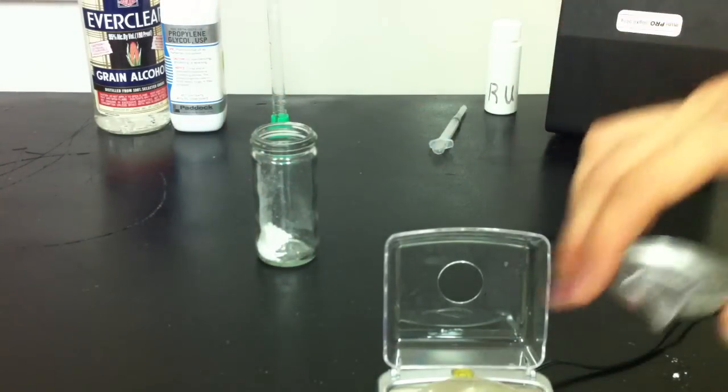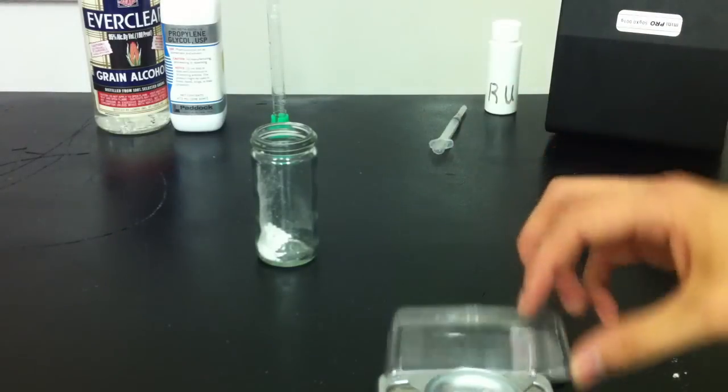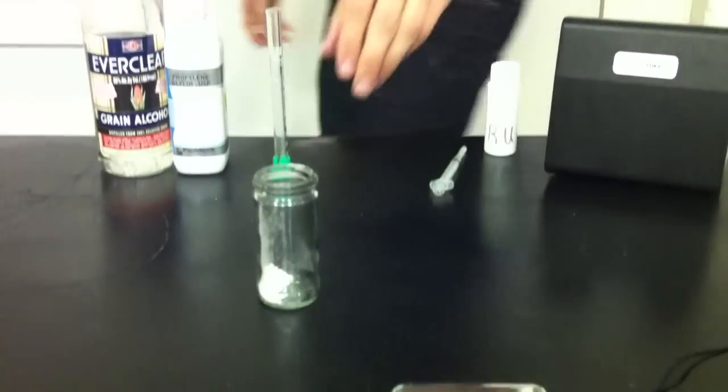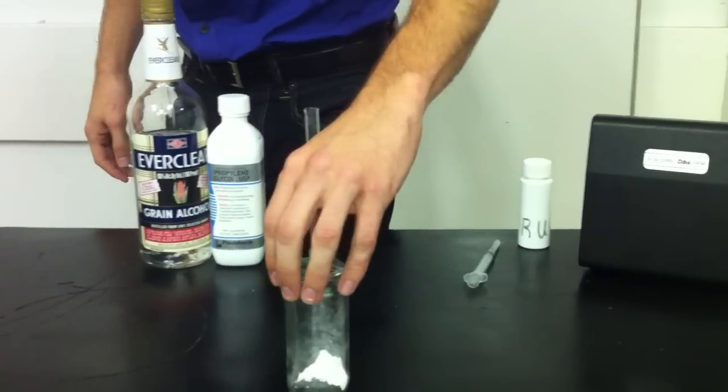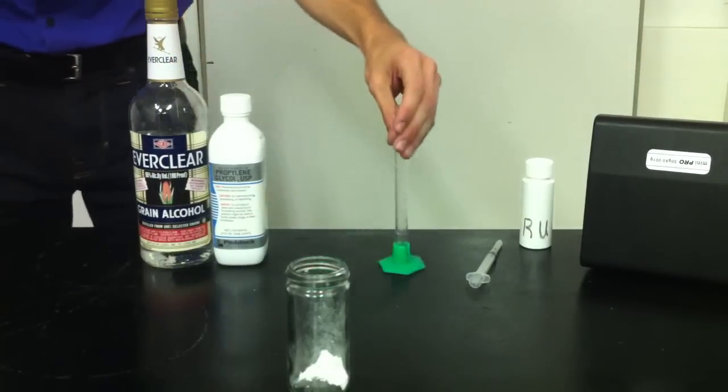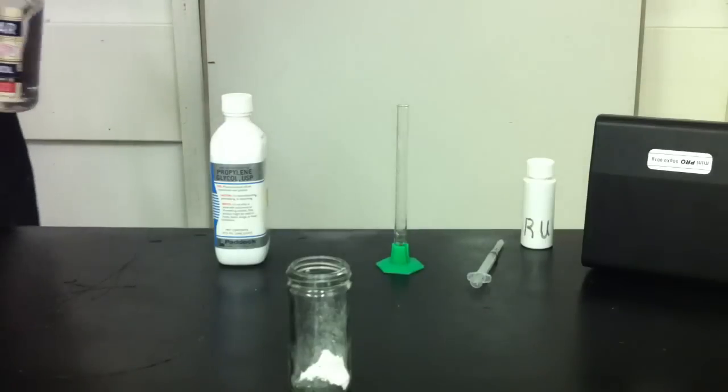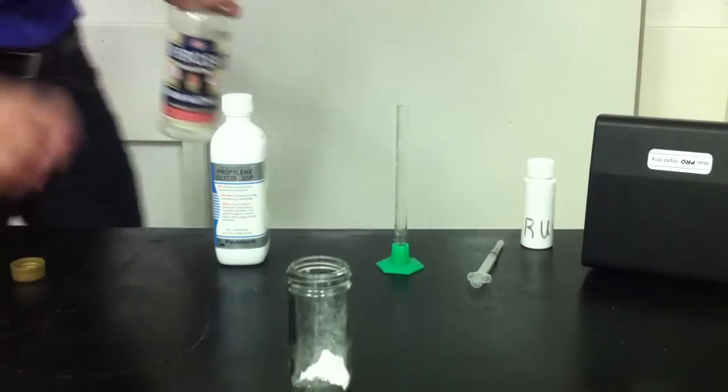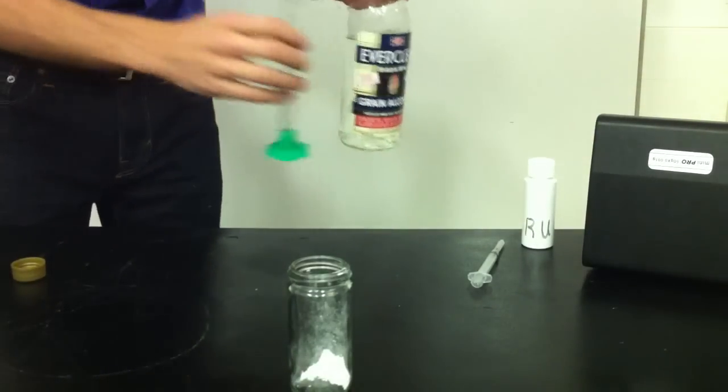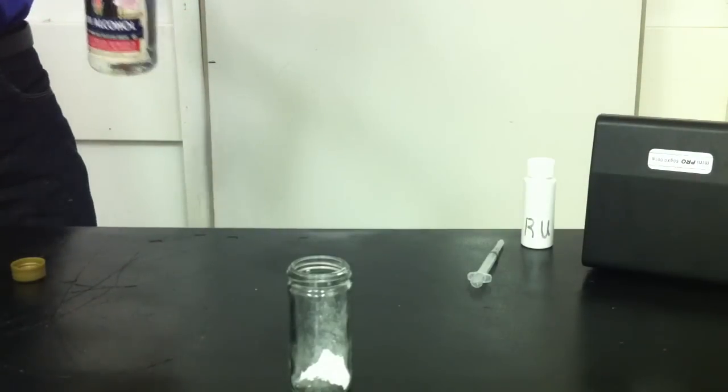Now comes the dissolving portion. So we've got the RU ready to be dissolved, now we need to go ahead and portion out our alcohol. So we know we want 21 milliliters. I've got my graduated cylinder here, just simply measure it out. I'm going to do it in 10 milliliter increments.